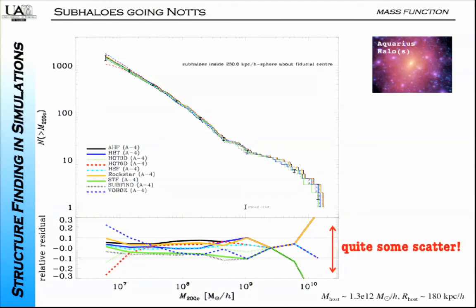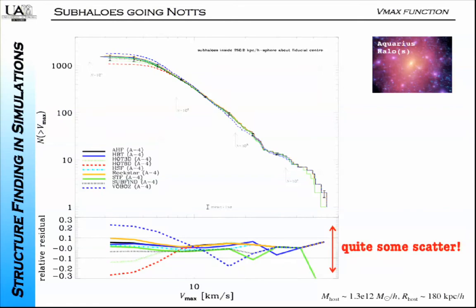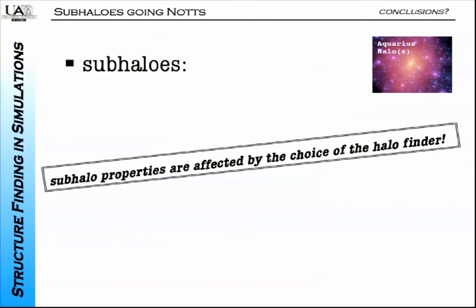This is now the sub-halo mass function and the sub-halo V_max function. Maybe the scatter is a little bit lower—it's lower than the 10% band, whereas before it was at the upper bound. Finding sub-halos is a more challenging task, so those codes that are able to find sub-halos need to be more developed. But nevertheless, sub-halo properties are also affected—there is still scatter.